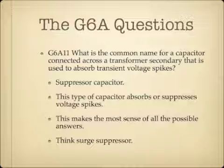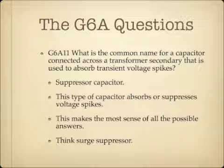What is the common name for a capacitor connected across a transformer secondary that is used to absorb transient voltage spikes? The answer is suppressor capacitor. This is the type of capacitor which absorbs or suppresses voltage spikes — if you think surge suppressor, that's kind of what we're talking about here. So the common name for that capacitor is a suppressor capacitor.